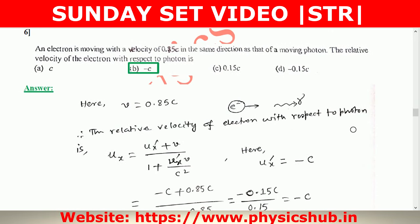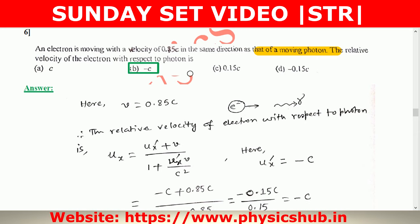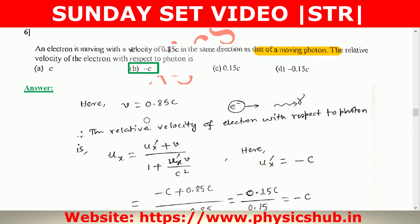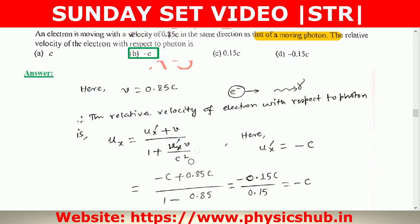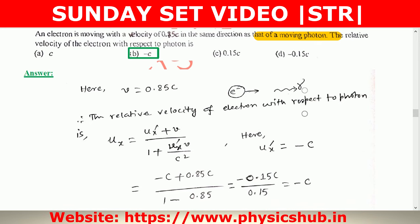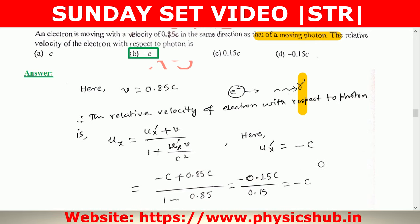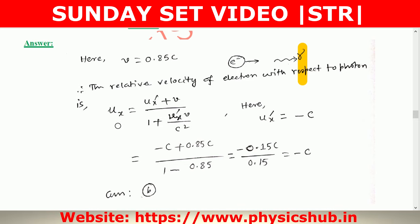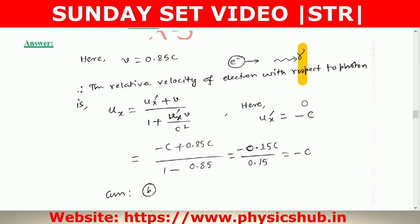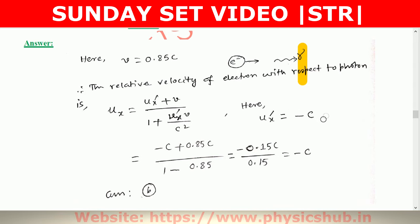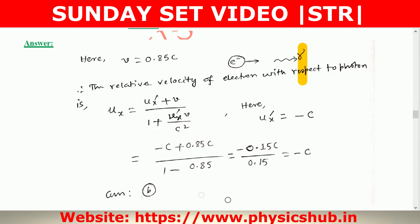Question 6: An electron moves with velocity 0.85c in the same direction as a moving photon. What is the relative velocity of the electron with respect to the photon? We use the relativistic velocity addition formula: uₓ = (uₓ′ + v) / (1 + uₓ′·v/c²). In the frame of the photon (moving at c), the electron is seen moving in the opposite direction, so uₓ′ = −c. Substituting into the formula gives uₓ = −c. Therefore the relative velocity is c, matching option B.